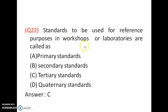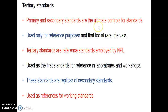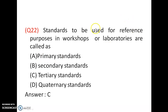Standards to be used for reference purposes in workshops or laboratories are called tertiary standards. Primary and secondary standards are highly accurate but used only at rare intervals. Tertiary standards, also called reference standards, are employed by NPL (National Physics Laboratory) and are the first standards used for reference in laboratories, workshops, and tool rooms to calibrate other instruments. Answer is C.